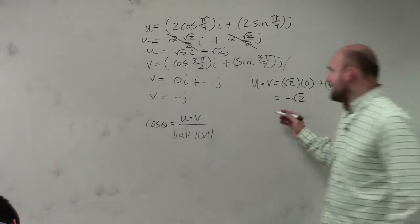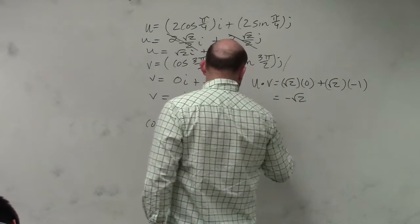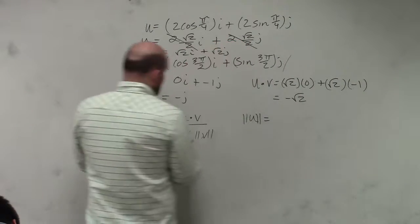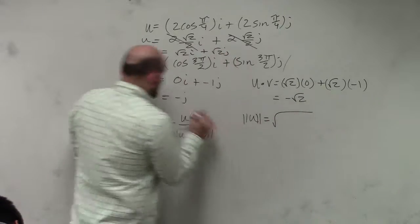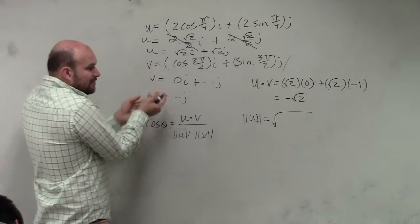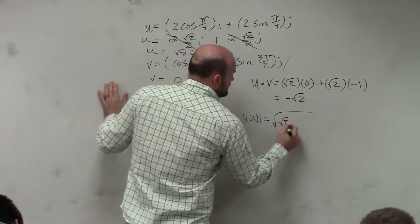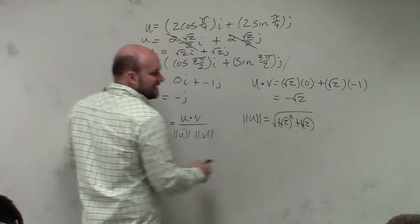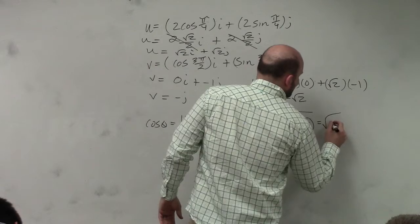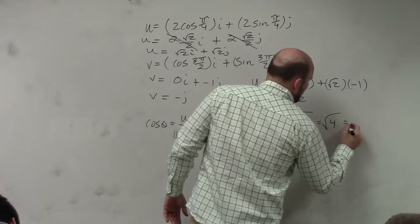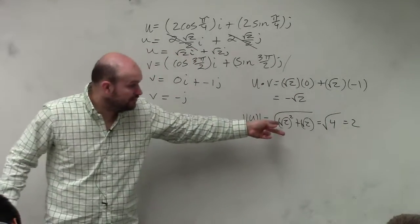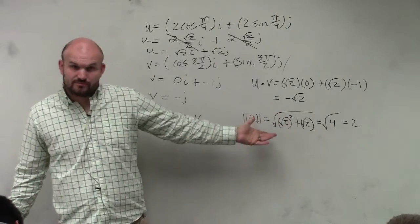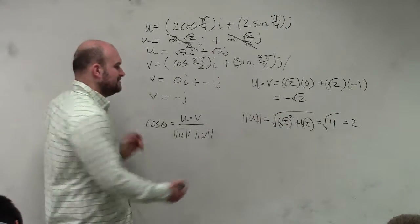Then I need to find the magnitude. So the magnitude of u is simply the square root of its first component squared plus the second component squared. Well guys, square root of 2 squared plus square root of 2 squared is going to equal square root of 4. Square root of 2 squared is just 2. So I'm not even using the calculator yet.